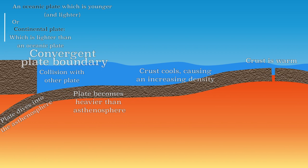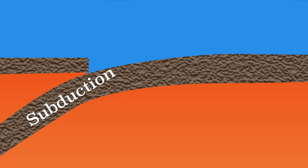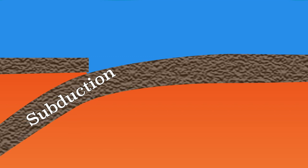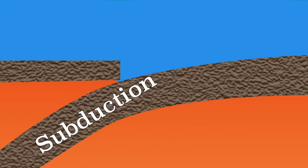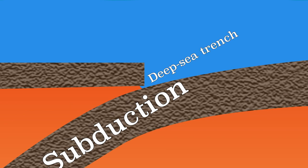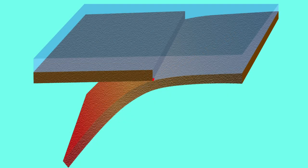The diving down of the old heavy oceanic plate is called subduction. On the border between the upper plate and the underlying oceanic plate, a deep area is created in the sea. This deep part is called a deep sea trench, or simply trench. Along the entire plate boundary where there is subduction, there is a very long trench.